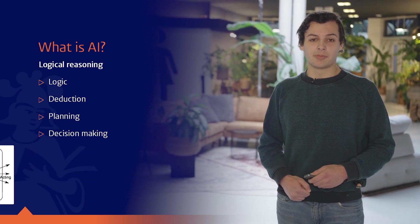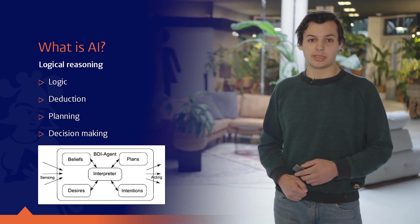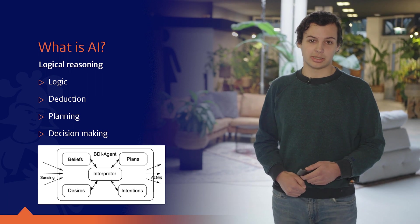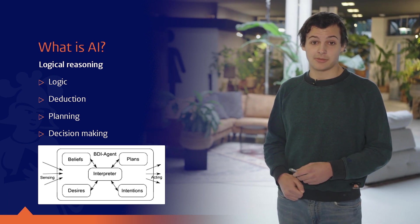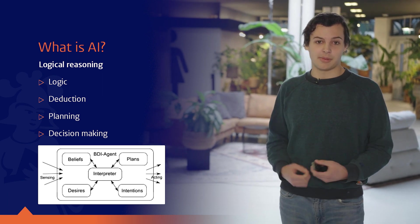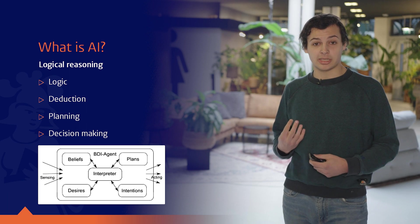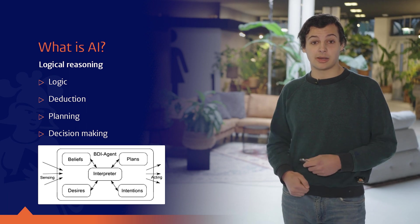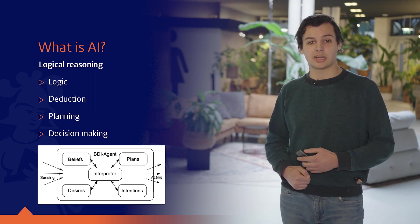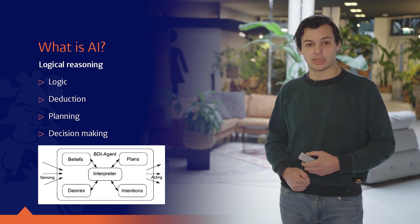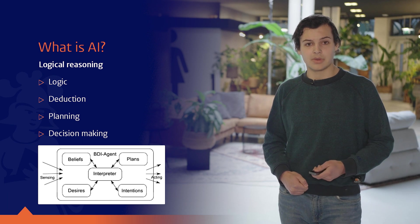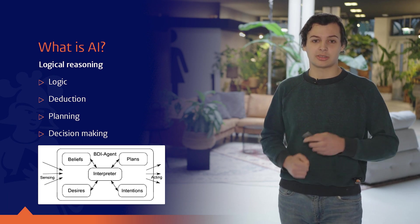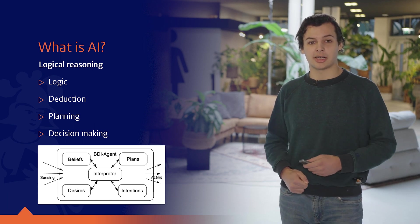A core component of this is logical reasoning. This consists of logic, deduction, planning, and decision making. By combining these four steps we will end up with computer-assisted logical reasoning. This has of course to do with the think step in our sense-think-act cycle.